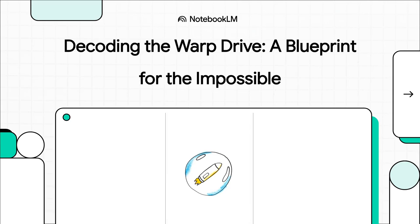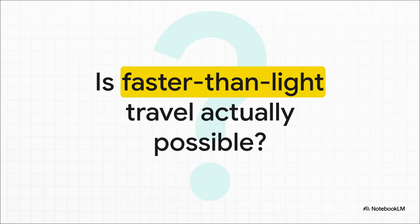All right, welcome back to The Explainer. Today, we're diving into something straight out of science fiction, but maybe it's not. We're going to decode a set of incredibly detailed blueprints for a real, honest-to-goodness warp drive. And listen, this isn't just some fan theory. This is a serious, physics-based look at how we might, just might, one day shatter the universe's ultimate speed limit. So, let's just ask the big question right up front. Is faster-than-light travel even possible?